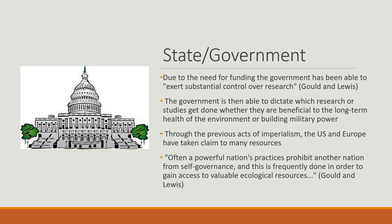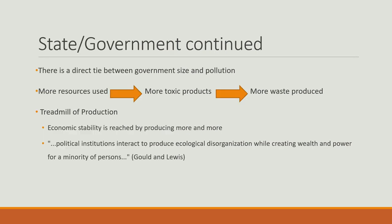Through previous acts of imperialism, the U.S. and Europe have taken claim to many resources. Often a powerful nation's practices prohibit another nation from self-governance, frequently done in order to gain access to valuable ecological resources. There is a direct tie between government size and the amount of pollution produced — they tend to use more resources, which produces more toxic products and more waste. This is also called the treadmill of production, where economic stability is reached by producing more and more. Political institutions interact to produce ecological disorganization while creating wealth and power for a minority of persons.